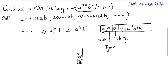Repeat these steps: first a push, second a ignore, third a push, fourth a ignore, and so on. For n number of a's, perform these two operations alternately. When I see a b, I start popping a from the stack — one a popped per b. When I see epsilon and the stack top is z₀, I can reach the final state.